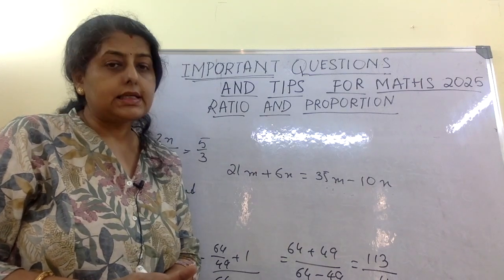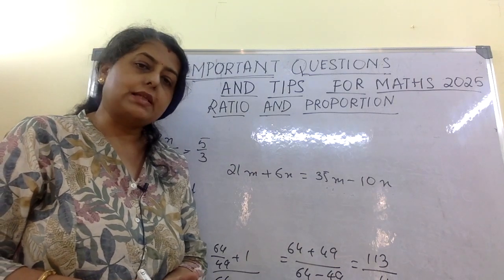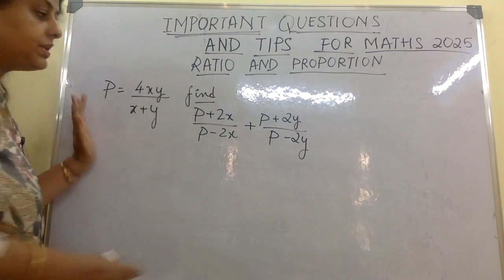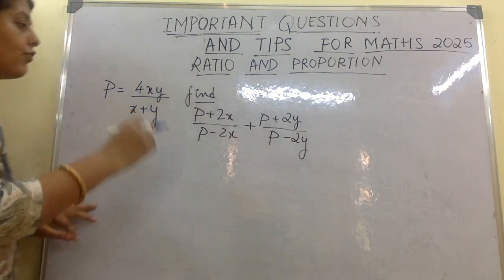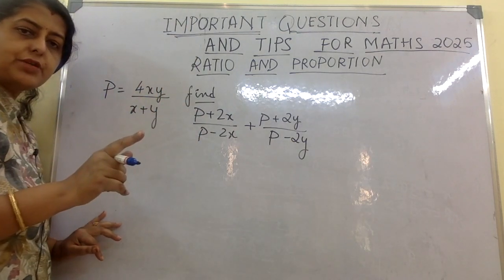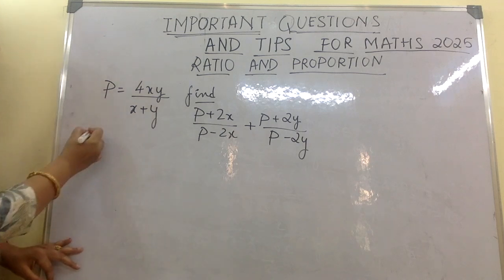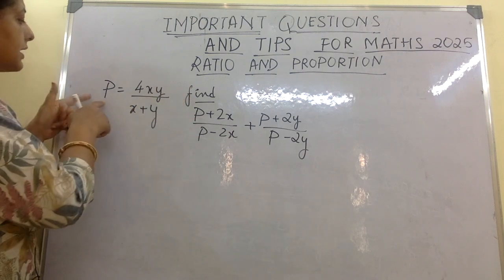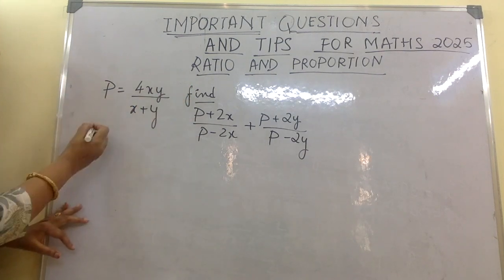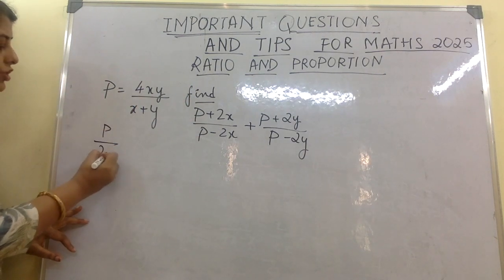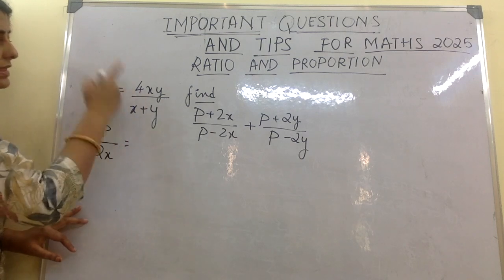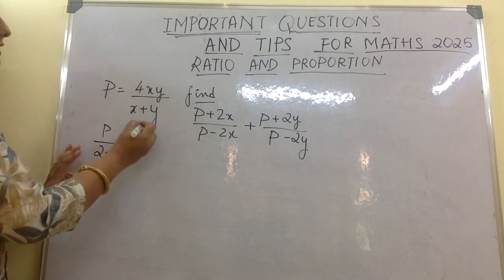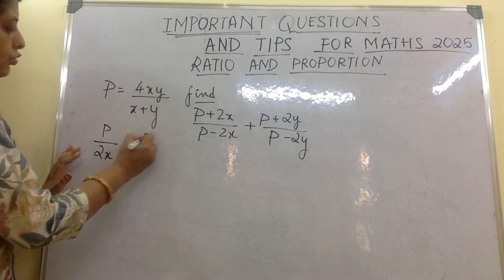Here they have given us the value of p and they want us to find the value of a given expression. When we look at it, it looks like a componendo-dividendo problem. What we have to do is get 2x in the expression. From the given value of p, taking out 2x, what is left is clearly 2y.